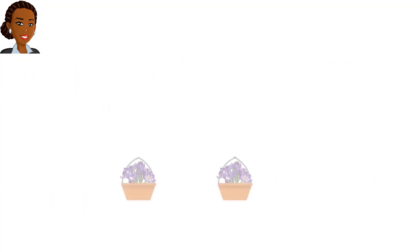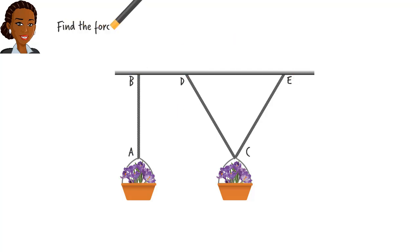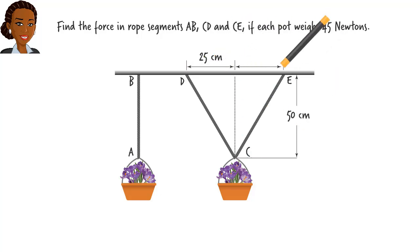Let's go over a simple example. Suppose we are given this system consisting of two flowerpots and the ropes that secure them vertically. If no other external forces are applied to the system, we can say that the system is in static equilibrium. That is, no rigid body movement takes place here. Assuming that each pot weighs 45 Newtons, we wish to determine the tension force in the ropes.